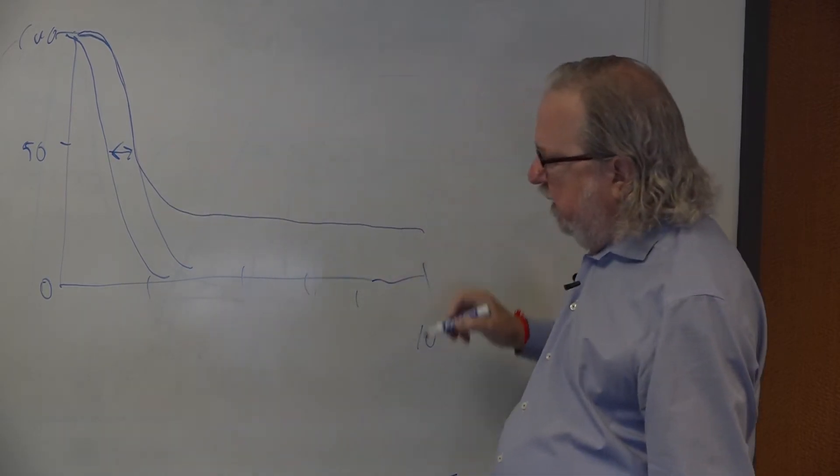But what we know with immunotherapies, you can get this effect, but also, at least for ipilimumab and melanoma, the curve flattens out about three years and stays there for ten years plus.